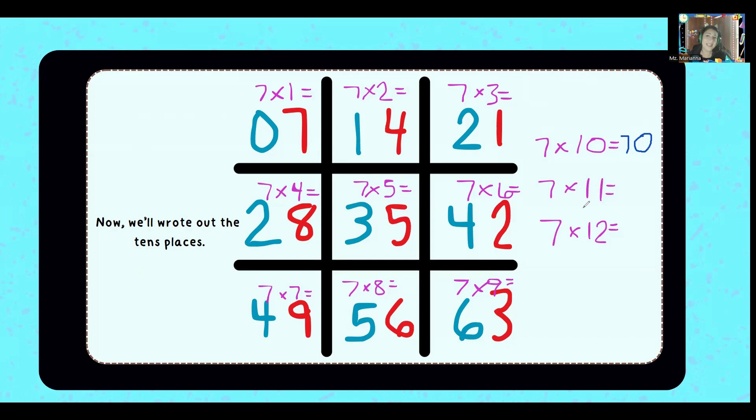For the 11s, you're going to repeat the number. Remember, you're multiplying by 11 two times. That's two sevens next to each other for 77.